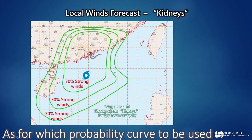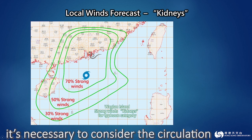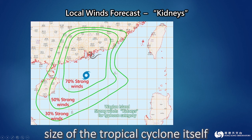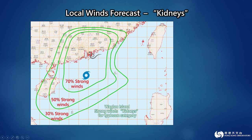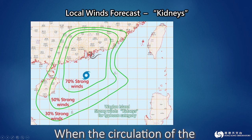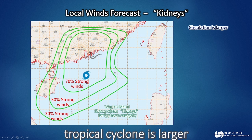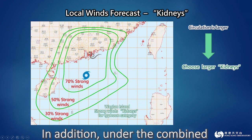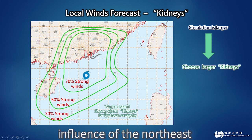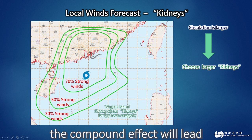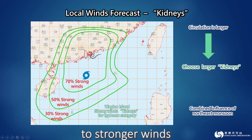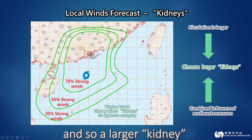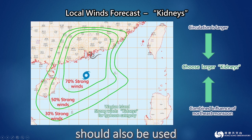As for which probability curve to be used, it is necessary to consider the circulation size of the tropical cyclone itself. When the circulation of the tropical cyclone is larger, the larger kidneys should then be used. In addition, under the combined influence of the northeast monsoon, the compound effect will lead to stronger winds, and so a larger kidney should also be used.